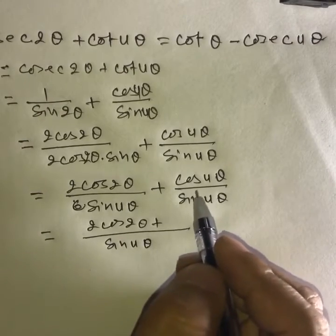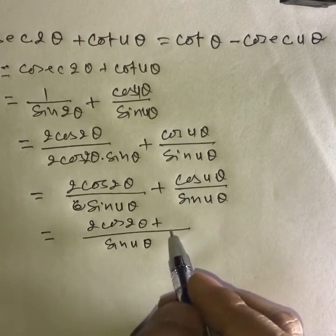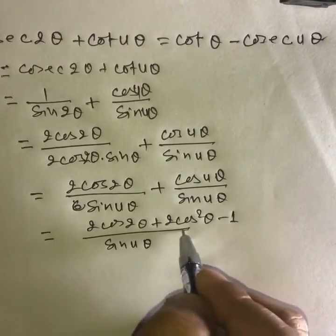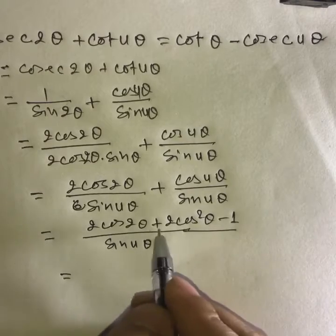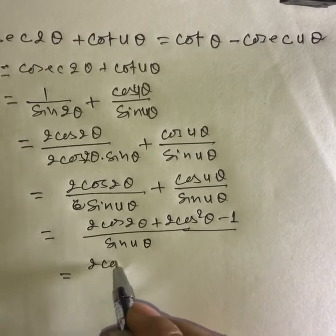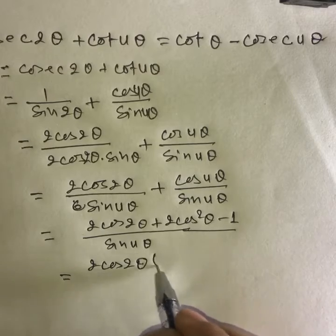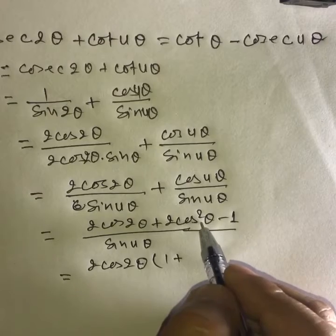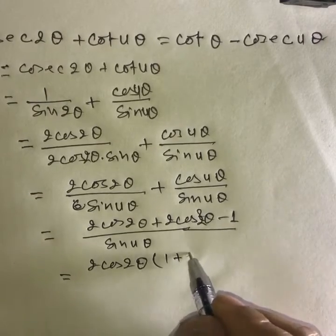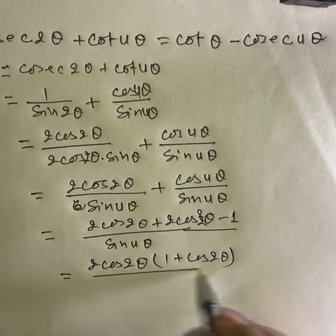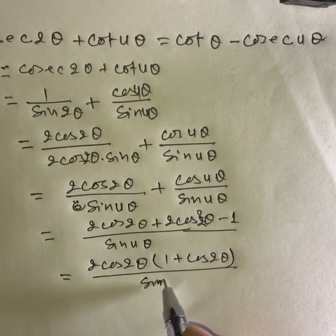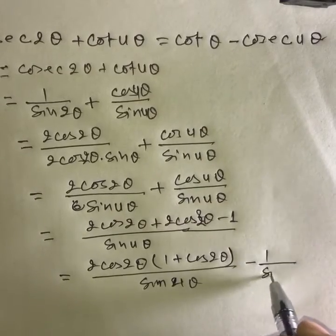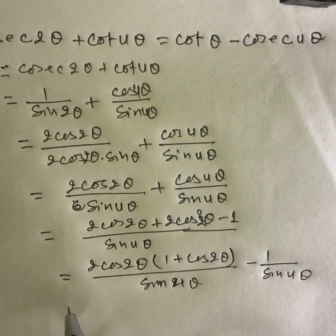plus cos 4 theta, that is cos 2 of 2 theta. Then we can use the formula 2 cos squared theta minus 1. And then in this term, taking 2 cos 2 theta common, here will be 1 plus 1 plus cos 2 theta over sin 4 theta, minus 1 over sin 4 theta.